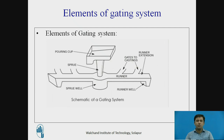The third element is the sprue well. The sprue well is placed immediately under the sprue and helps to reduce turbulence as metal flows from the sprue to the runners. After the metal enters from the pouring cup to the sprue to the sprue well, it rushes through the runner. The runner connects the sprue well to the different ingates.